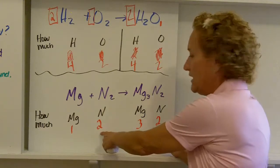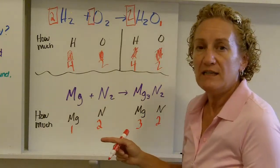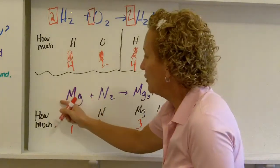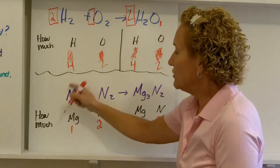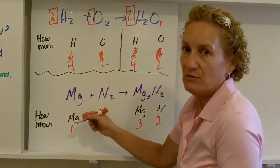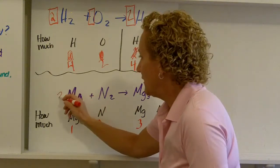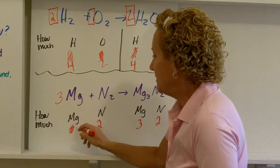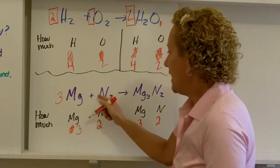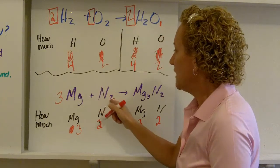Now my nitrogen is fine, isn't it? But my magnesium is not. Again, I can only change coefficients. I cannot change subscripts. So is there anything I can do to magnesium to make it three? Well sure, this one's pretty simple. If I made that a three, how much magnesium do I have now? Three. How much nitrogen? Still two.